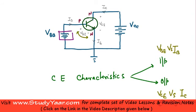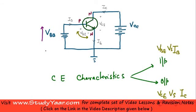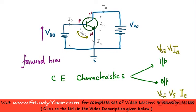It is a graph of VCE versus your collector current. Now let's look at your input characteristic first. Over here you have your VBB which basically decides your base-to-emitter voltage. This is a PN junction — your N-type is connected to ground and you have a positive voltage over here. If you increase this voltage you're essentially increasing the base-to-emitter voltage, which increases the forward bias, and obviously your base current would also increase.